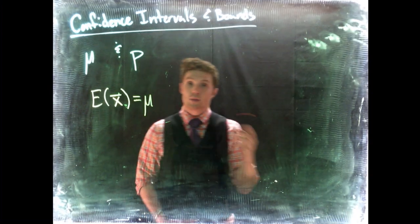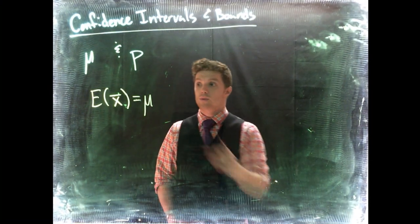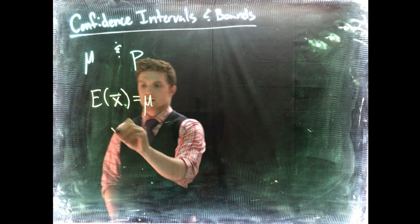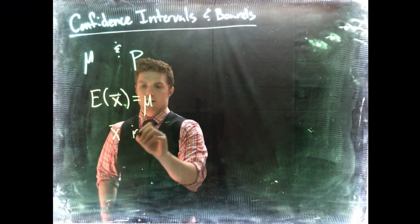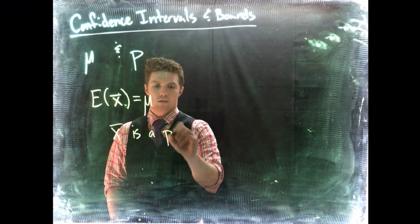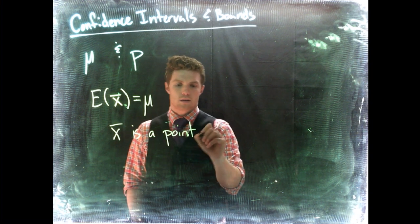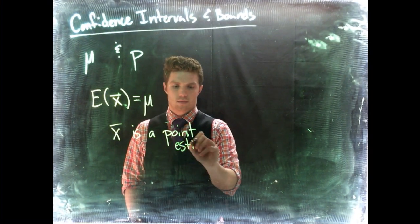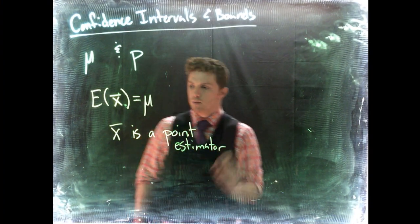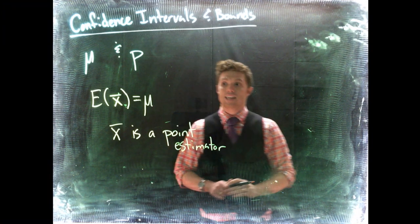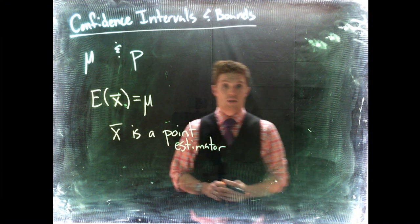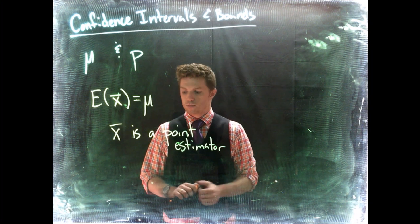Now what this in fact means then is that whenever we take a sample and we find the sample mean, x bar is a point estimator, meaning that x bar is our best guess of what mu is. Now it's wrong, but it is going to be our best guess.